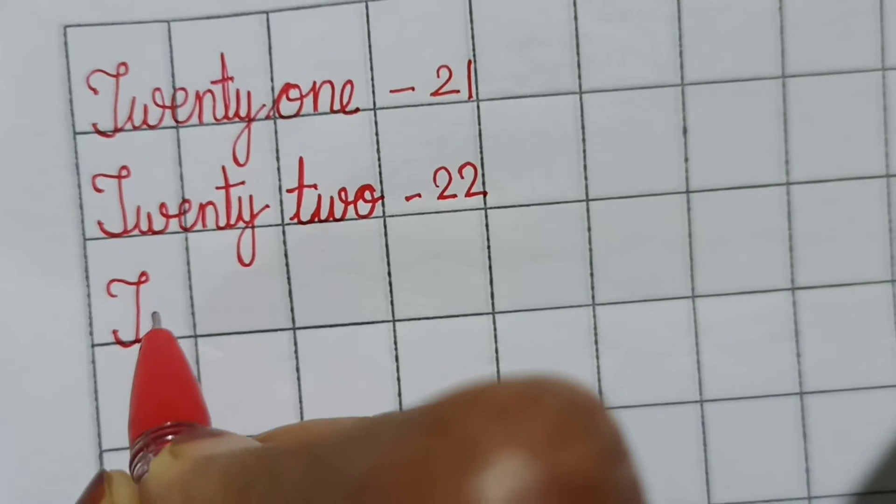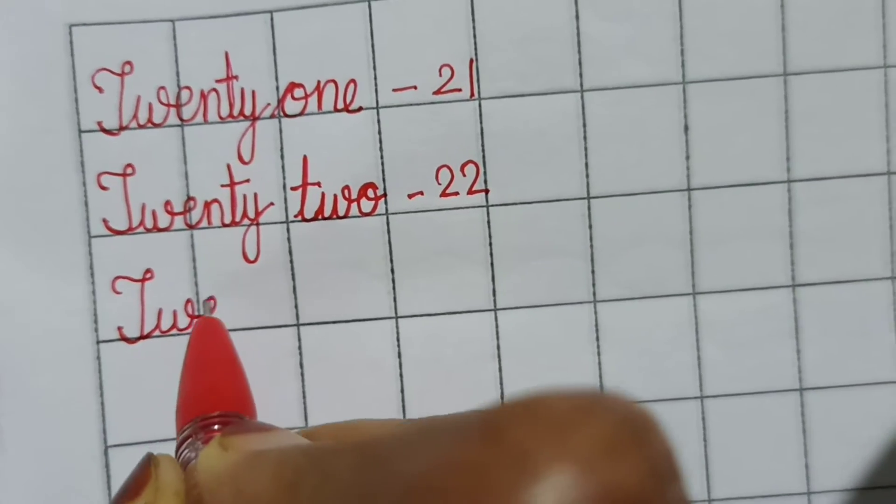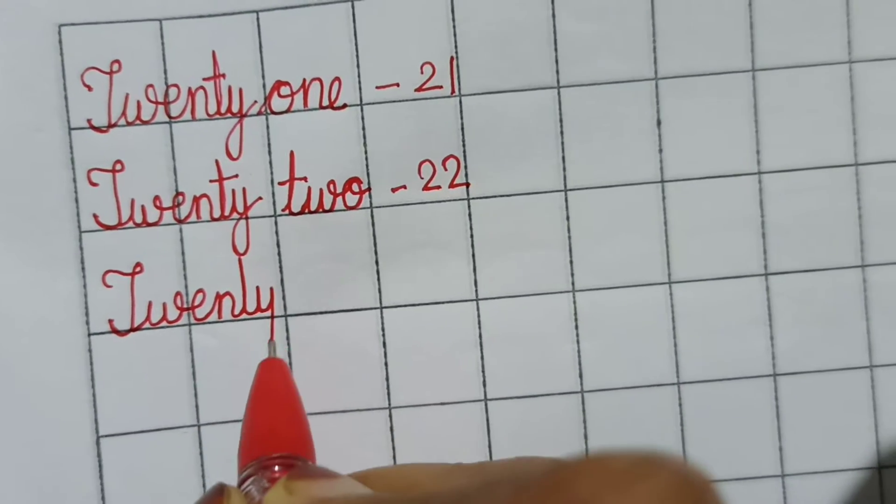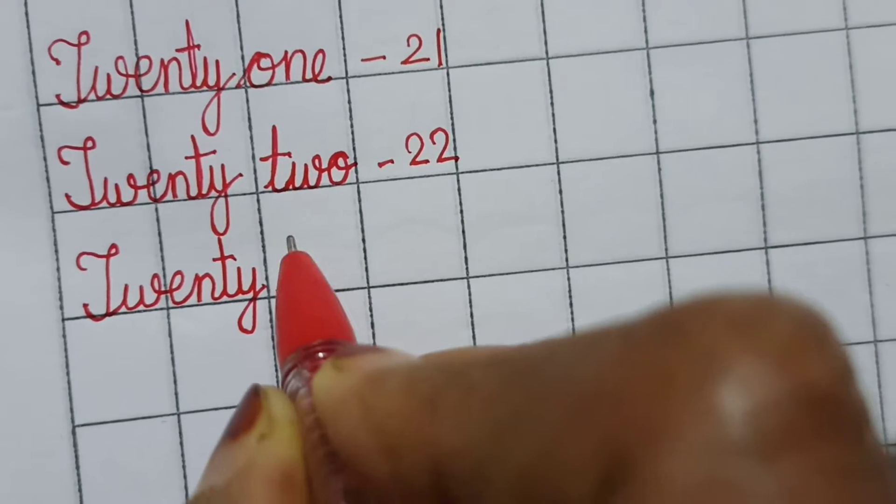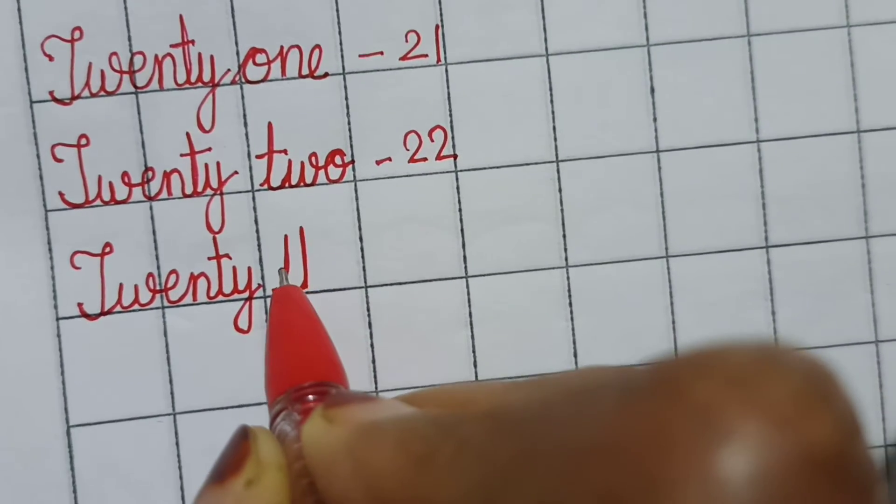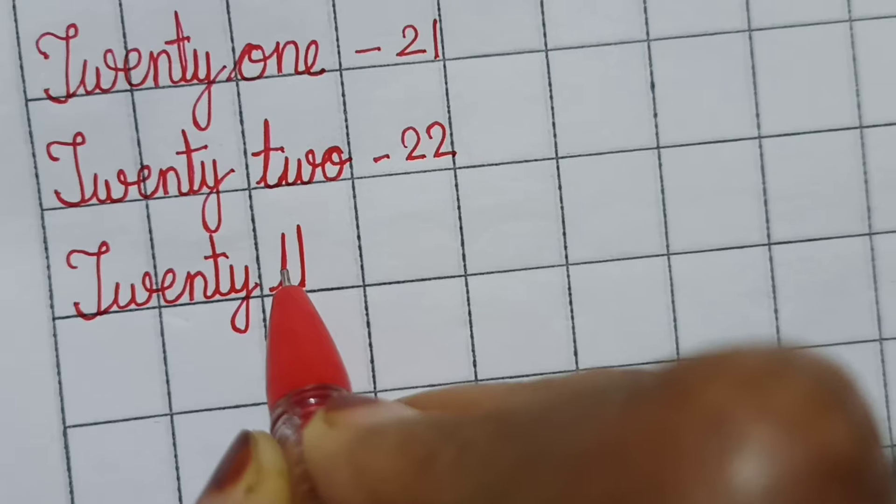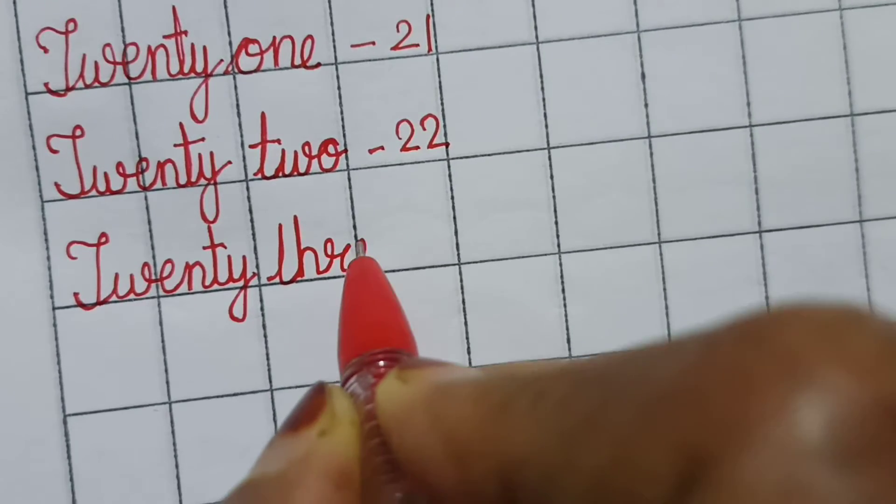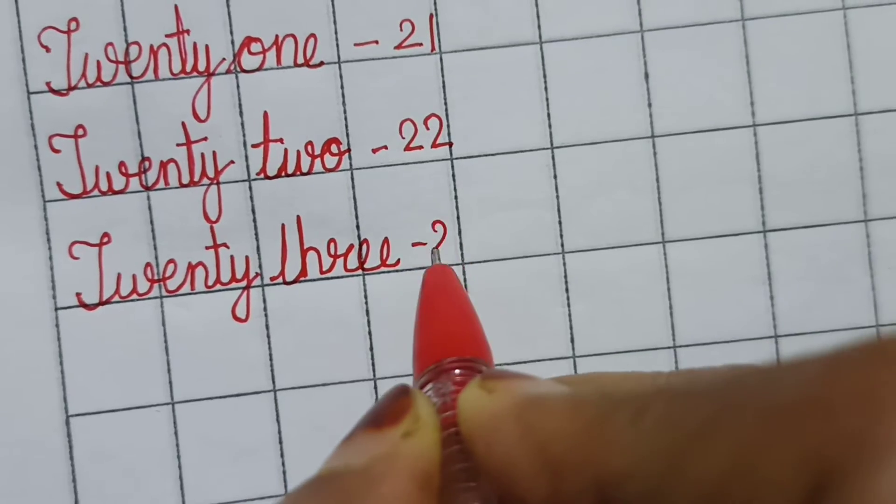T-W-E-N-T-Y, 20, T. Now see this is a T small. Again here. T-H-R double E. That is 23.